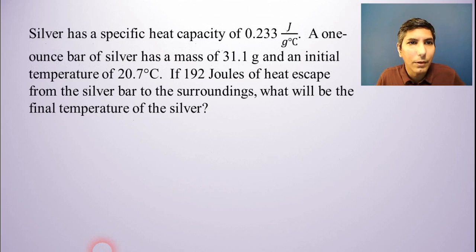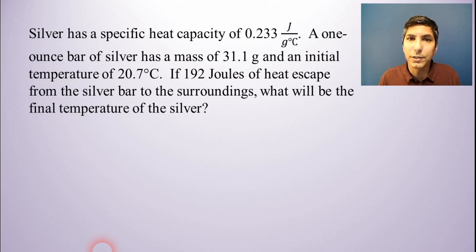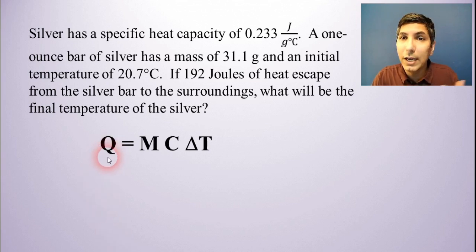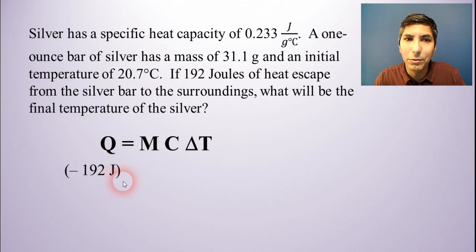Let's try another problem. Silver has a specific heat capacity of 0.233 joules per gram degree Celsius. A one-ounce bar of silver has a mass of 31.1 grams and an initial temperature of 20.7 degrees Celsius. If 192 joules of heat escape from the silver bar to the surroundings, what will be the final temperature of the silver? We're using Q equals MC delta T. Q is how much heat energy is transferred, and here it says 192 joules are escaping, so I'm going to write this as negative 192 joules.